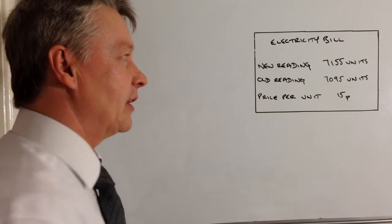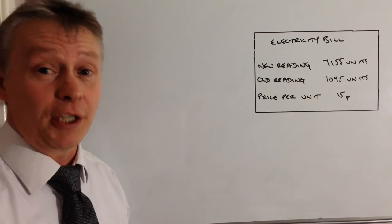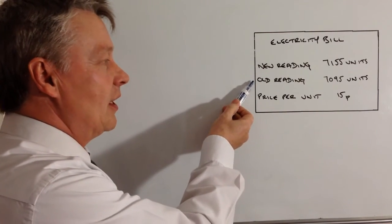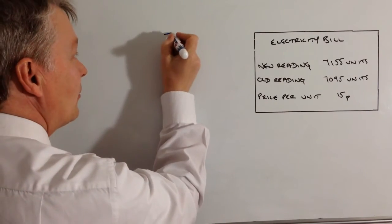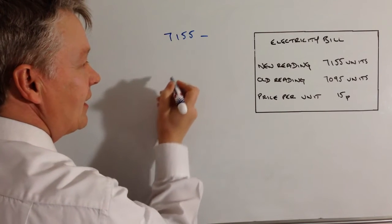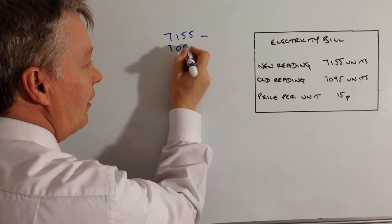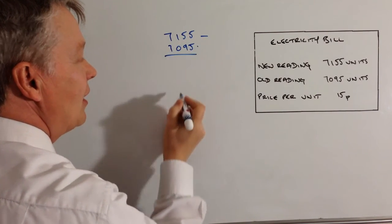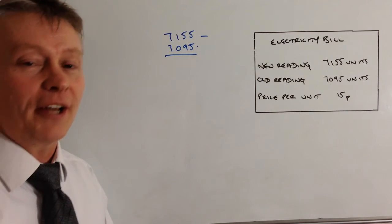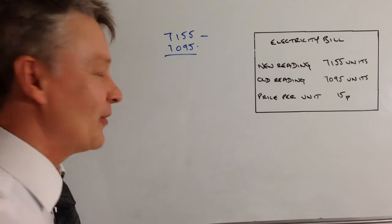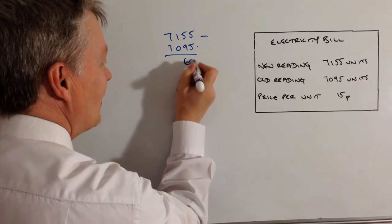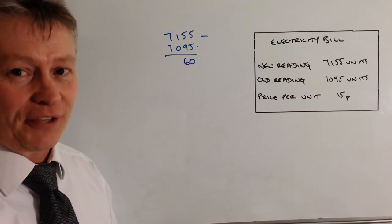Okay, so we need to work out how many units he's actually used between the old reading and the new reading. So it's a fairly straightforward takeaway. We've got 7155 takeaway 7095. And I'm very aware that there are different methods of doing these sorts of takeaways, but that will work out at 60 units for you.